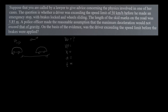The final velocity is going to be zero meters per second, since the vehicle came to a stop at the end and is no longer moving. X, the distance traveled by the car, we know to be 5.85 meters, because that is the length of the skid marks on the road.